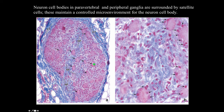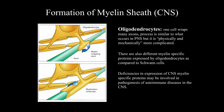Formation of the myelin sheath in the central nervous system occurs by oligodendrocytes — one oligodendrocyte can wrap around many axons. The process of myelination is similar to what occurs in the peripheral nervous system but is physically and mechanically more complicated. There are differences in myelin-specific proteins expressed in oligodendrocytes versus Schwann cells, and these differences may be involved in the pathogenesis of some autoimmune diseases, which you may encounter later in clinical training.